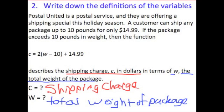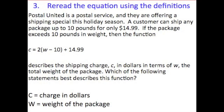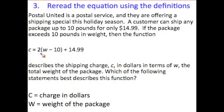After we define those variables, our third step is to re-read the equation with those definitions in it. We're going to read it one more time — the equation — and this time use the descriptions of those letters. C was the shipping charge in dollars, so when we see C we think 'charge in dollars.' So: the shipping charge in dollars is equal to 2 times the total weight of the package, minus 10, plus $14.99.